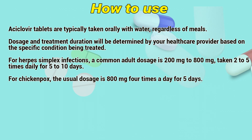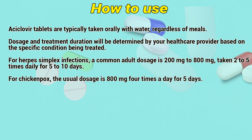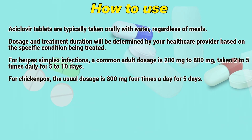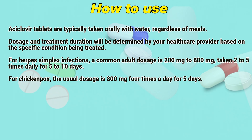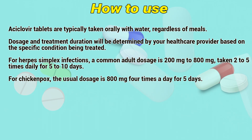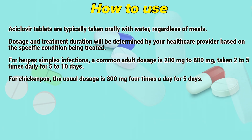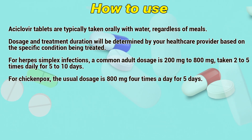For herpes simplex infections, a common adult dosage is 200mg to 800mg, taken 2 to 5 times daily for 5 to 10 days. For chickenpox, the usual dosage is 800mg 4 times a day for 5 days.